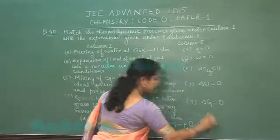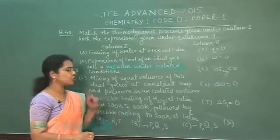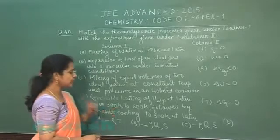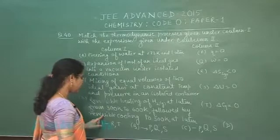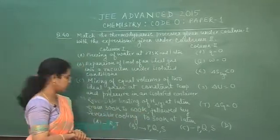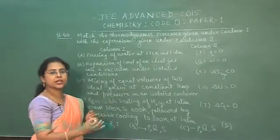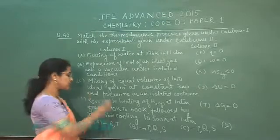Now fourth statement, that is D: reversible heating of hydrogen at 1 atmosphere from 300 Kelvin to 600 Kelvin, followed by reversible cooling to 300 Kelvin at 1 atmospheric pressure. We are doing reversible heating of hydrogen gas, this is a reversible process.